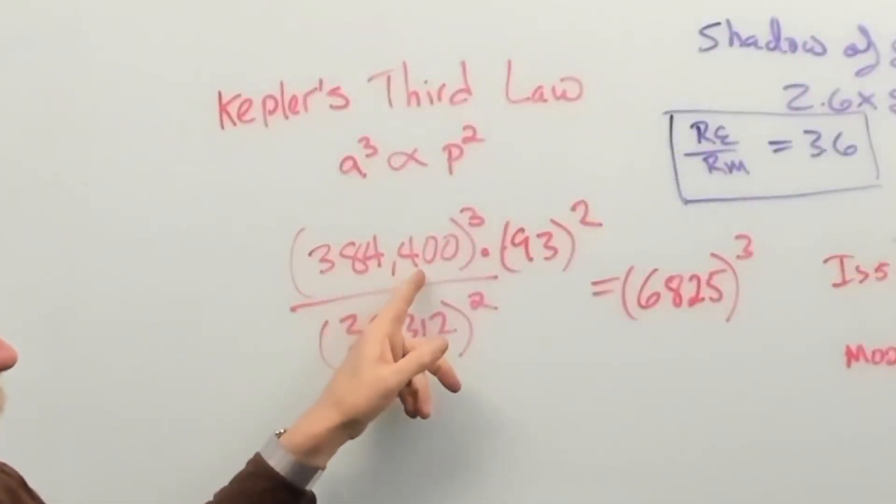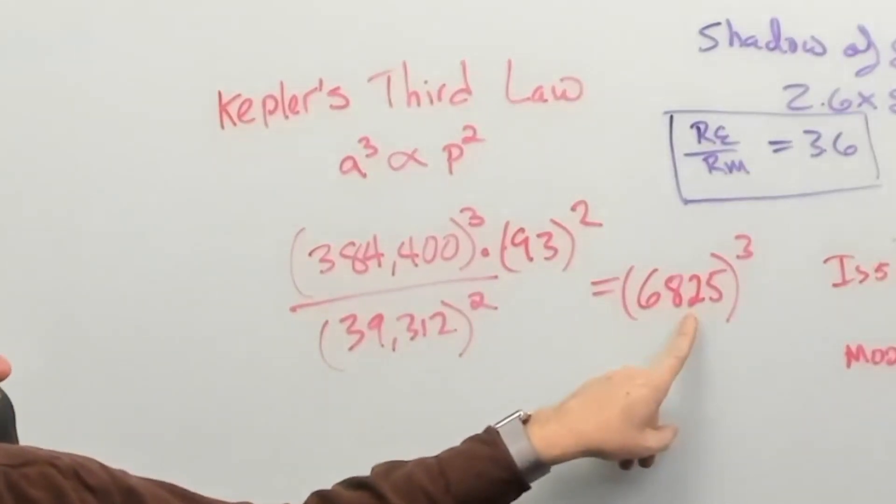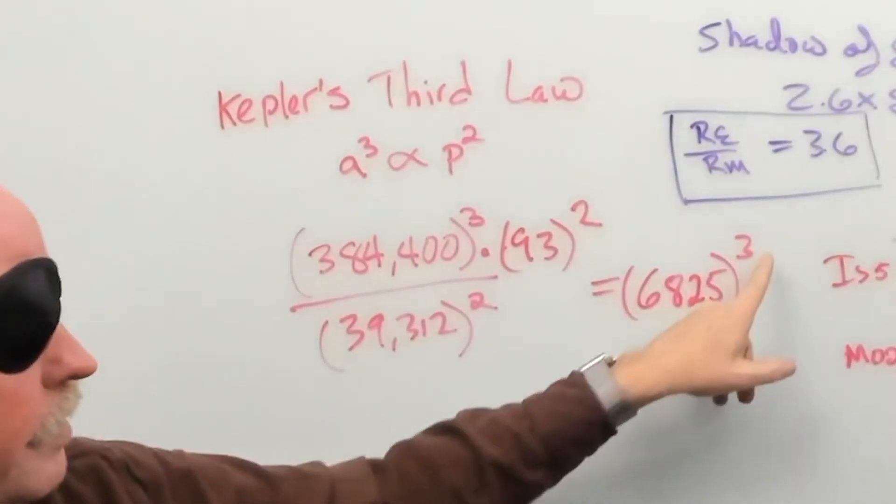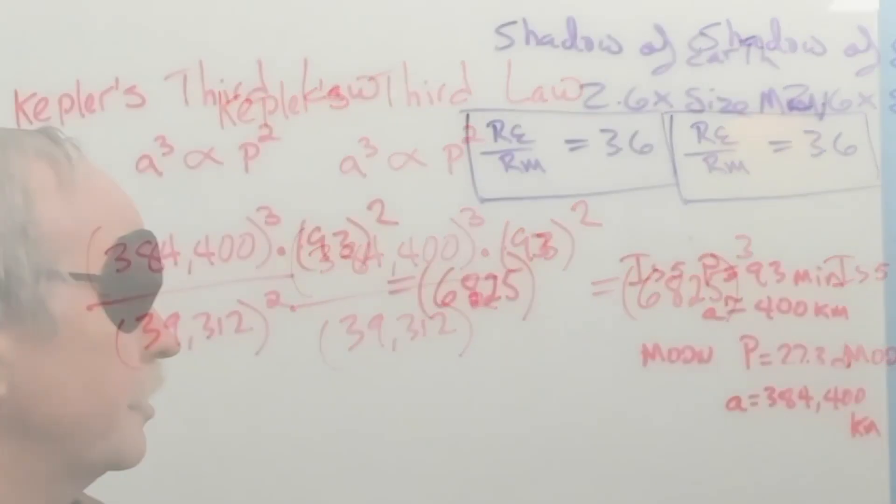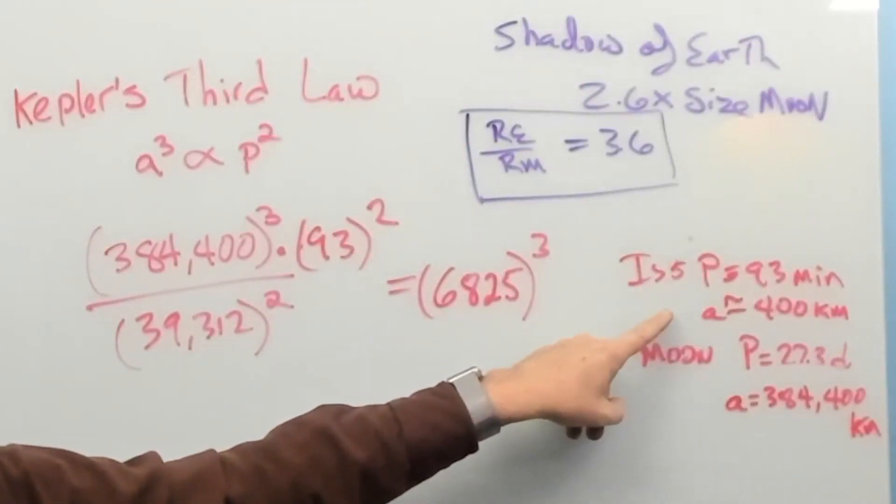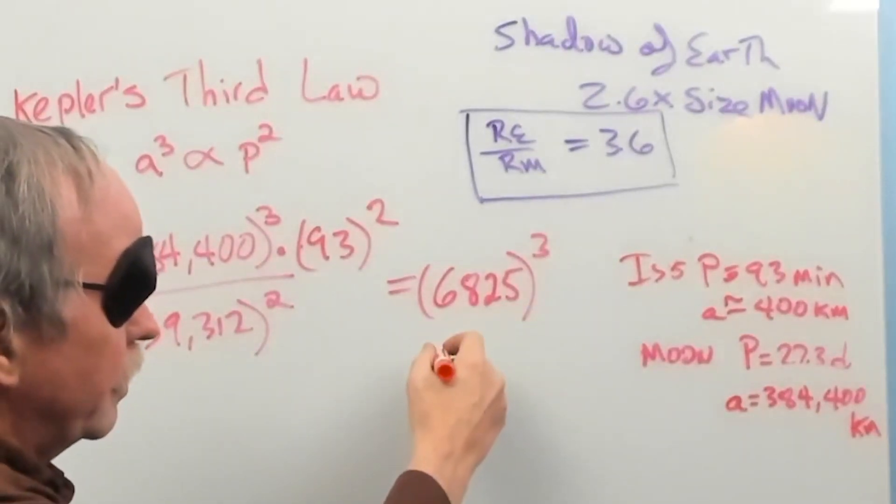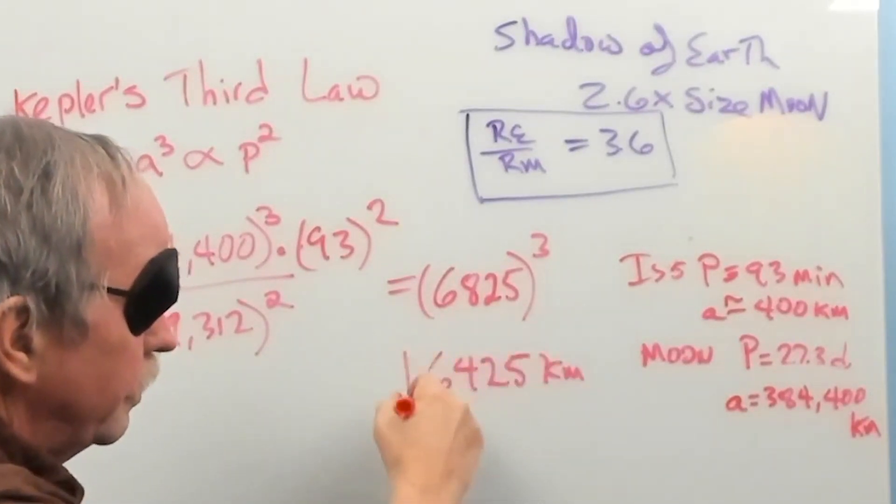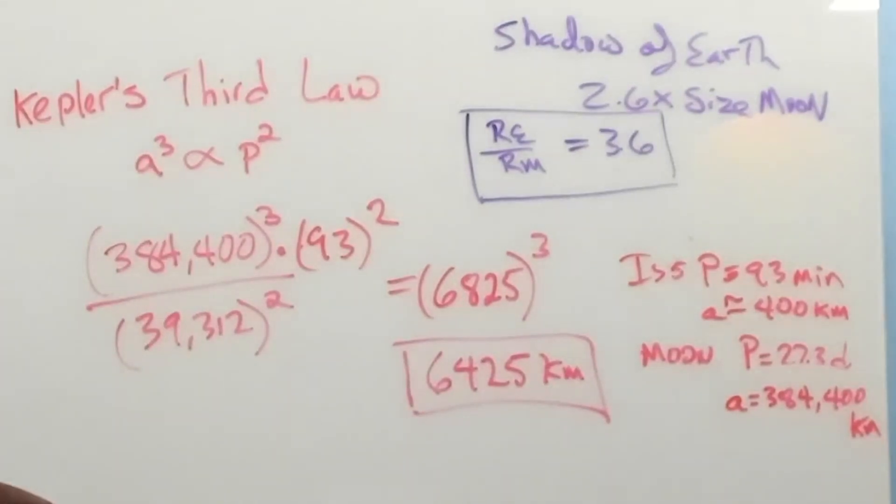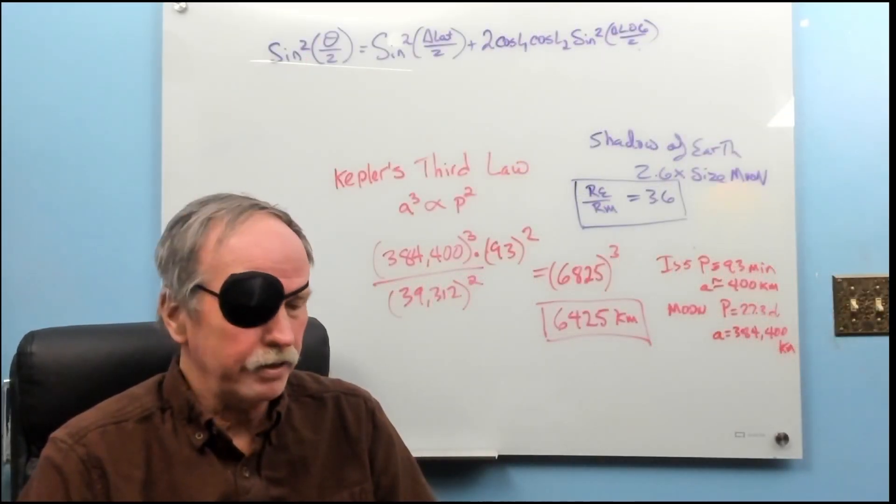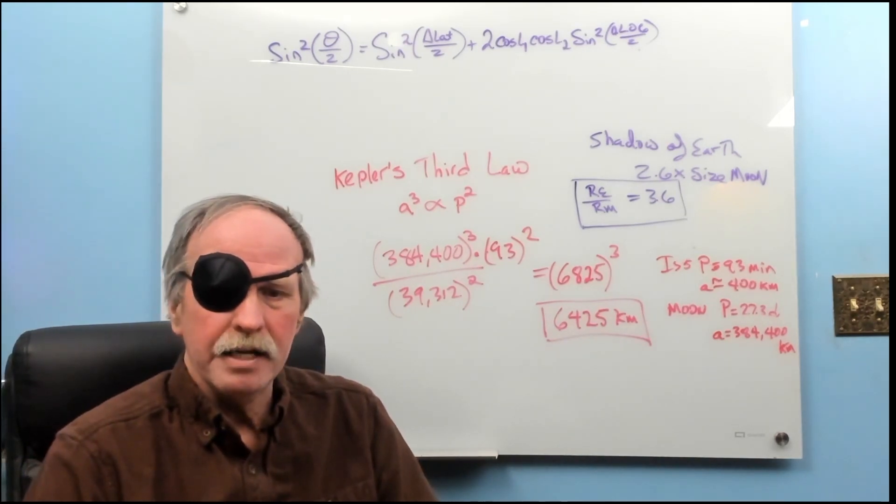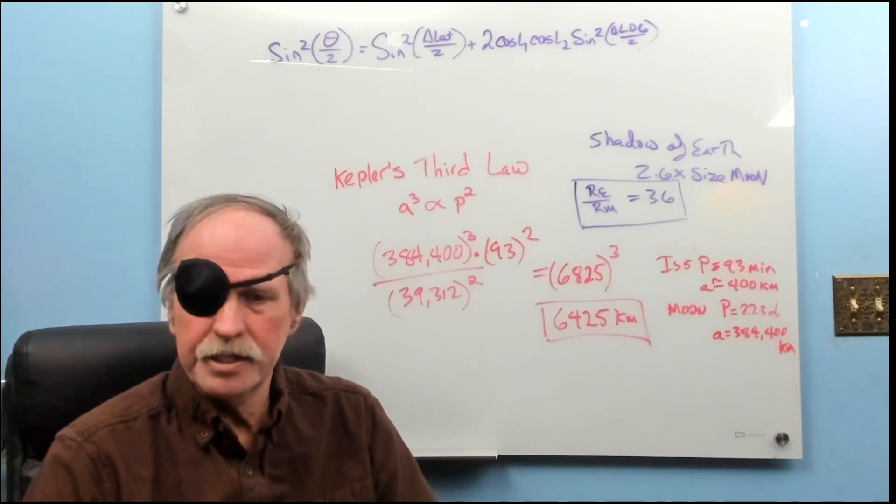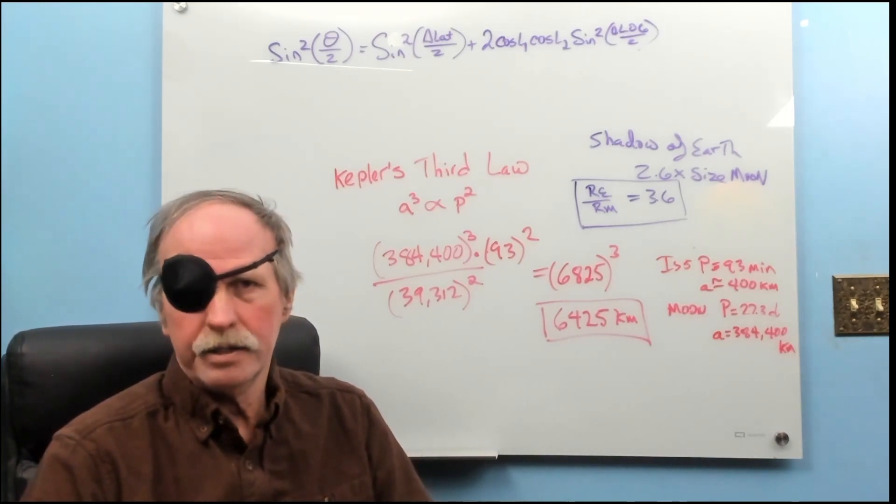384,400 cubed, times 93 squared, divided by 39,312 squared, equals 6825 cubed. And this will be in kilometers. The ISS orbits 400 kilometers above the surface of the Earth. So, we have to subtract that 400, and we get 6425 kilometers as the radius of the Earth. And that comes up to a diameter of the Earth of 12,850 kilometers. The official reading is 12,756 kilometers. We're less than 100 kilometers off.